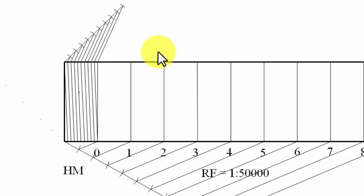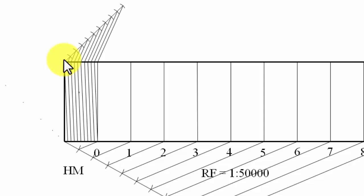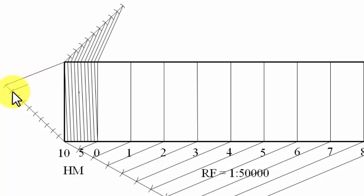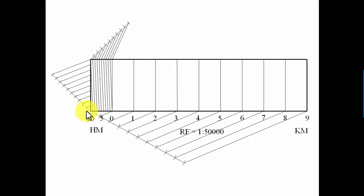The portion representing 1 hectometer is equivalent to 10 decameters, but it's too small to divide directly by the previous method. Instead, we divide the vertical line (5 cm height) into 10 equal parts. Draw a line from the top point at any suitable angle, mark 10 arcs of 5mm radius, join the 10th point back, then use the drafter to draw parallel lines through each arc point — dividing the vertical line into 10 equal parts.